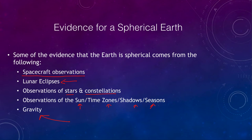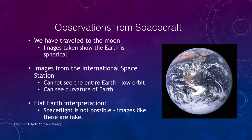Let's first look at observations from spacecraft, which is some of the most direct evidence. We traveled to the moon back in 1969, and images show that the earth is spherical. The astronauts could watch the earth rotate, seeing different parts of it, and could clearly see that the earth was not a flat disc.